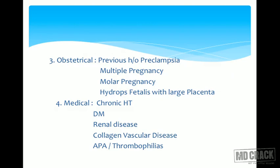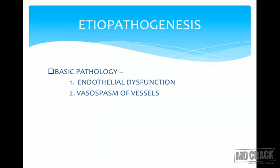Other predisposing factors include: previous history of preeclampsia in a prior pregnancy, multiple pregnancies, molar pregnancies, and hydrops fetalis where a large placenta (hyperplacentosis) leads to PIH. Medical disorders such as chronic hypertension, diabetes with vasculopathy, renal diseases, collagen vascular diseases, and antiphospholipid antibody syndrome are very common reasons for PIH.